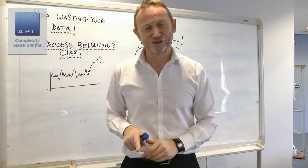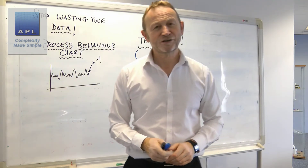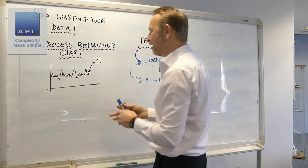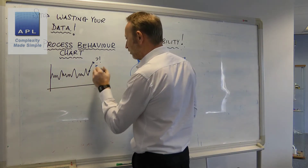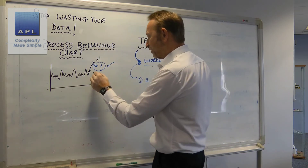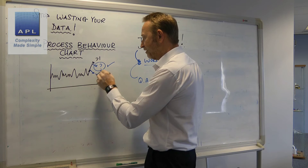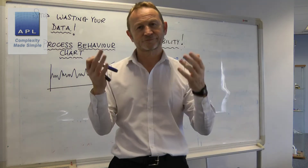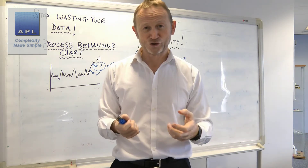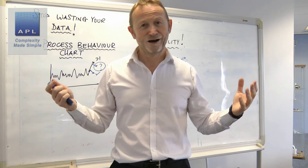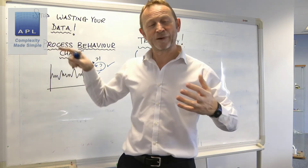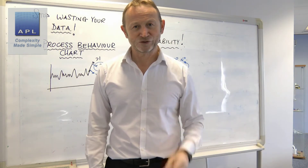Only QA are allowed access to the files — what a complete waste. If we could get the data, produce a process behavior chart, and use it to tell us something about the first-off — maybe that the first-off is okay because the process is behaving as it always has — we have gold here. It's cost money to collect, it's costing money to store, and we can't use it.